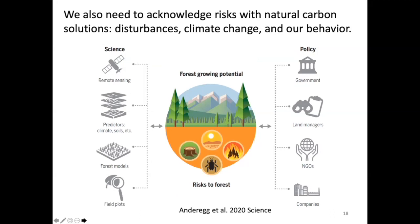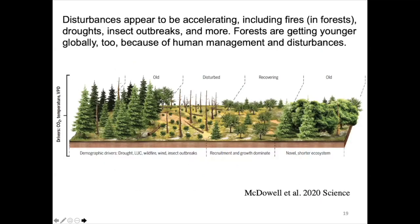A workshop summary by Bill Anderegg acknowledges the risks with natural carbon solutions from disturbances, climate change, and human behavior — decisions about when to cut a forest, how to manage rotation length, especially on privately held land. We have science tools including remote sensing, models, and monitoring plots to help, but policy from governments, private landowners, NGOs, and companies all influence the potential of forest and natural carbon solutions. We need to think about permanence — keeping carbon in the landscape over decades to a century.